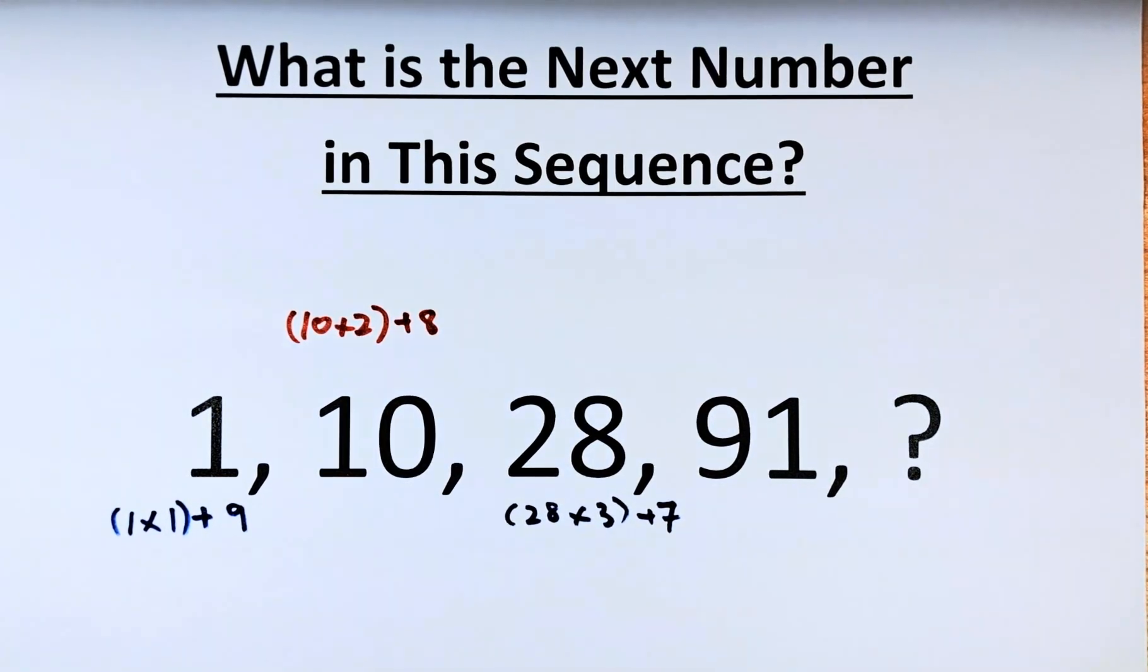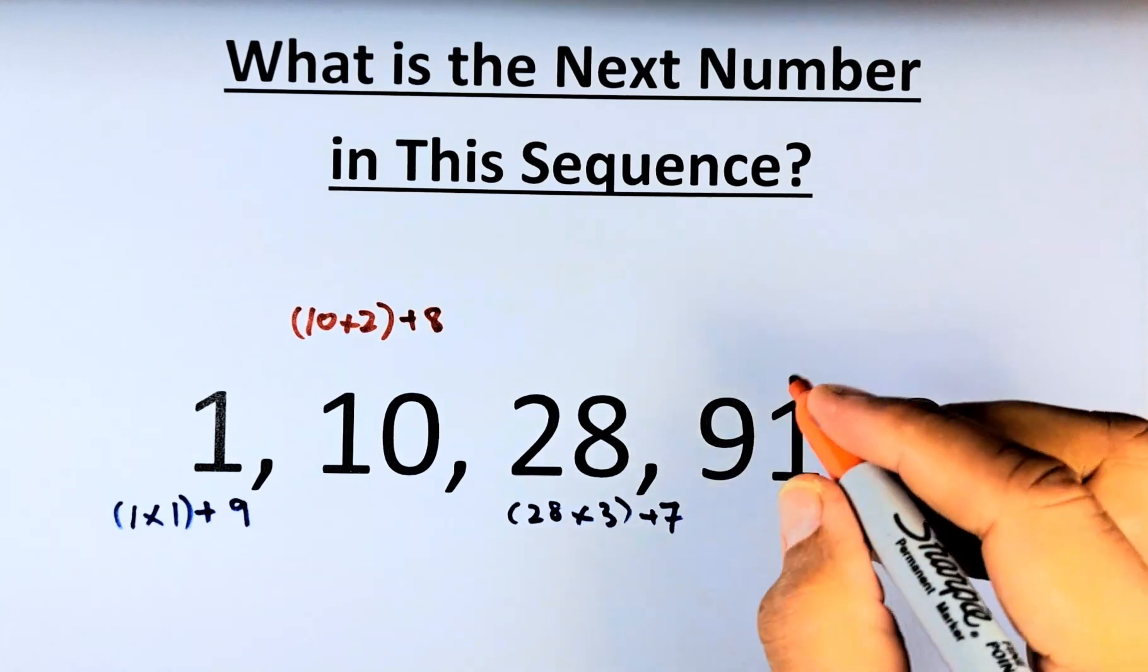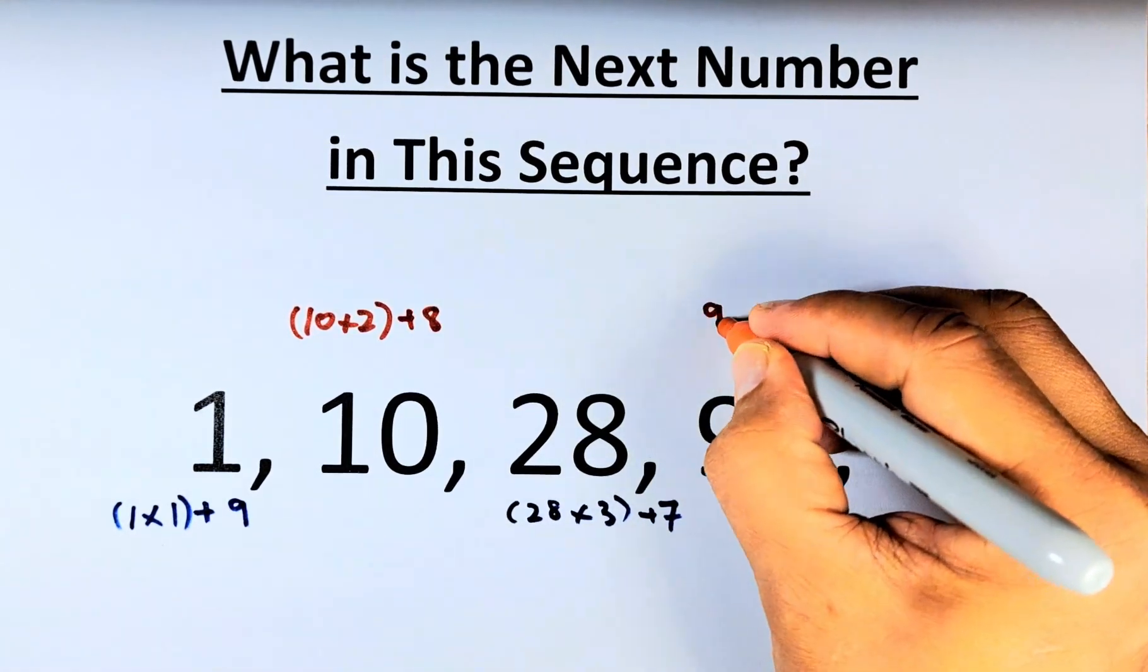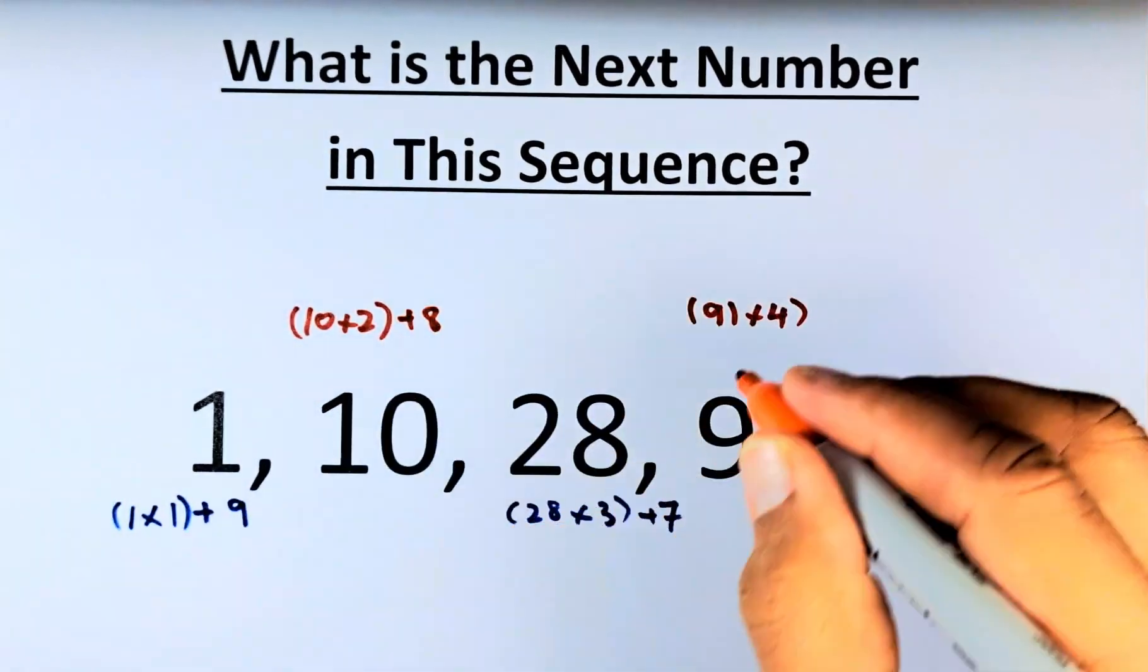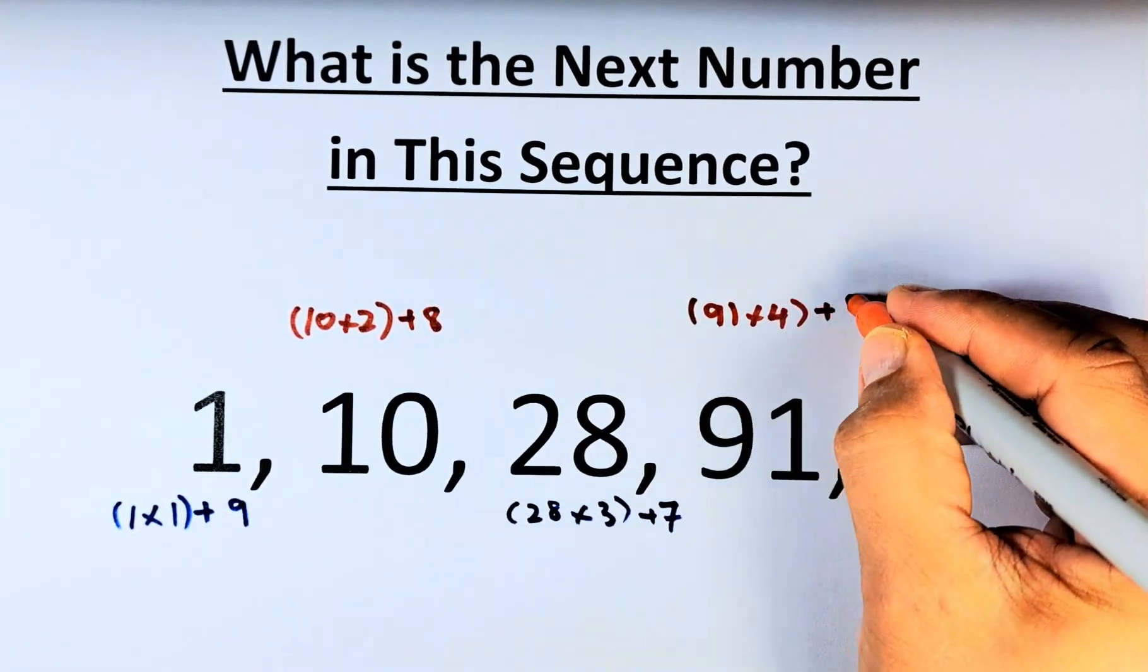So the trend continues. So to get from 91 to the question mark, we take 91 multiplied by 4, because it's 1, 2, 3, 4, and then we are going to add 6.